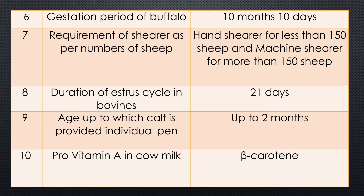Question seven: Requirement of shearer as per the number of sheep. If the sheep are less than 150, then a hand shearer will perform the function. Hand shearer for less than 150 sheep, and machine shearer for more than 150 sheep.